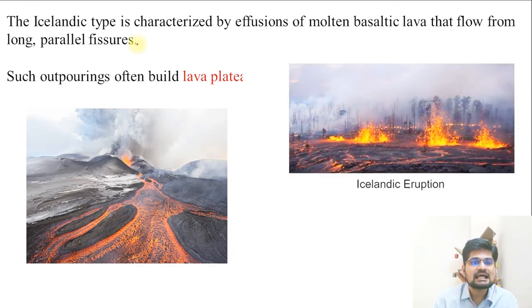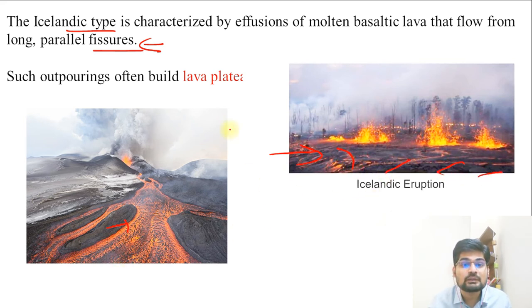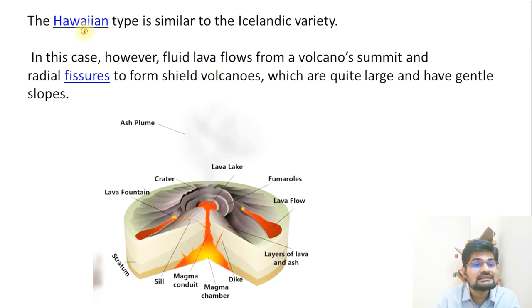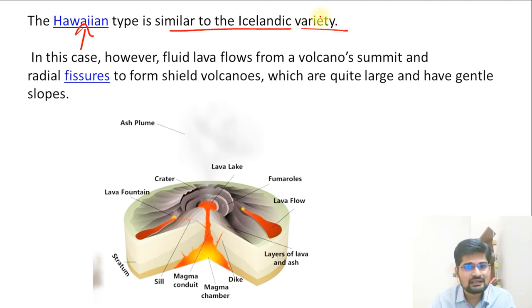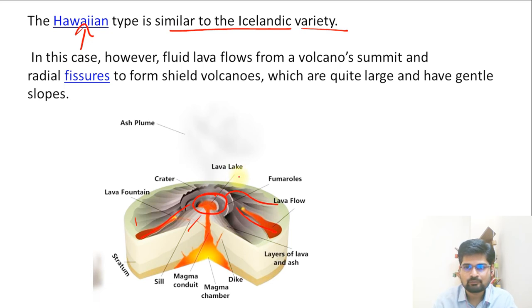The first eruption type is Icelandic — largely a fissured eruption with very little violence. Magma comes out from fissures and forms lava plateaus. The Deccan Traps are an example of this kind of fissured eruption. The second type is Hawaiian, similar to Icelandic but the lava release is from a summit rather than fissures, and it is also not very violent.